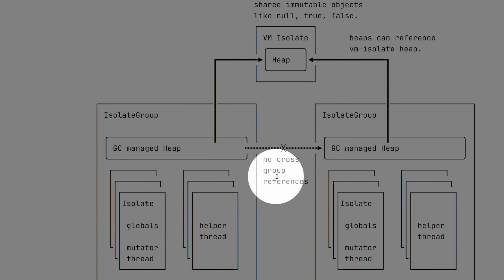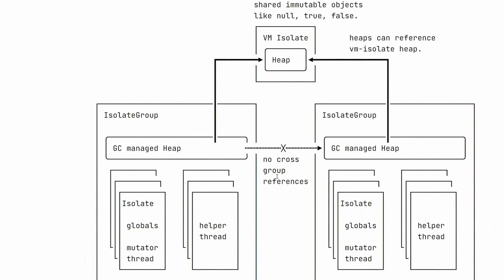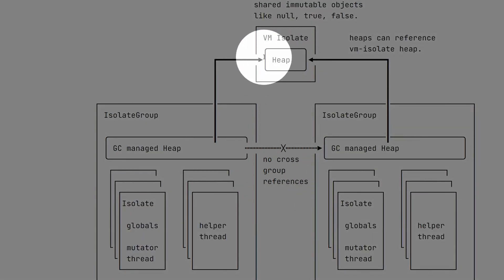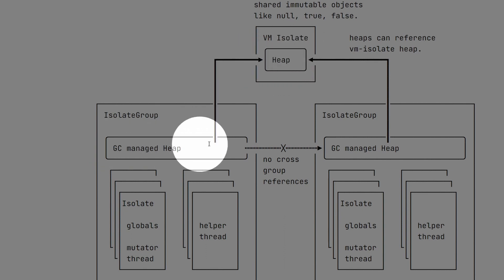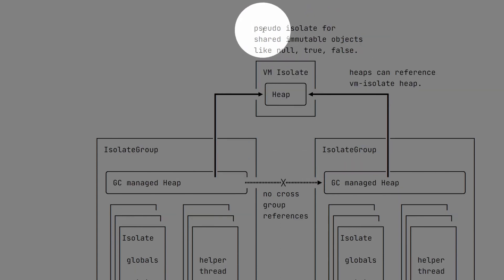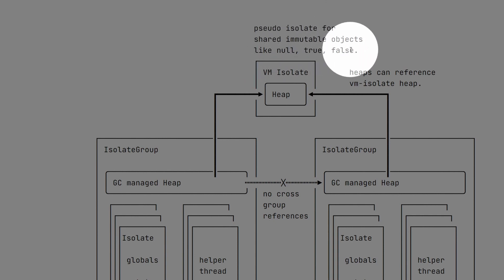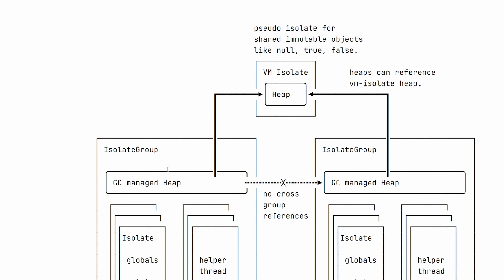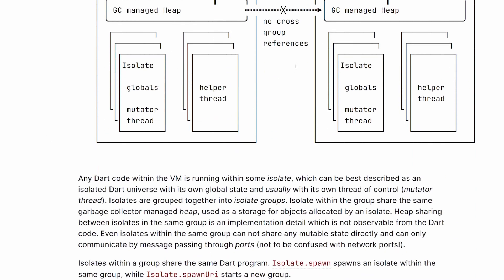That means both the memory we use to access values within our code, but also the actual GC managed heap, are not shared between groups. However, there is also this VM isolate up here, which has another heap. Both isolate groups have a reference to it, so there is some kind of shared heap between the two. But it's explained that this is a pseudo isolate for shared immutable objects like null, true, and false. So this is how the isolate structure currently looks in Dart.